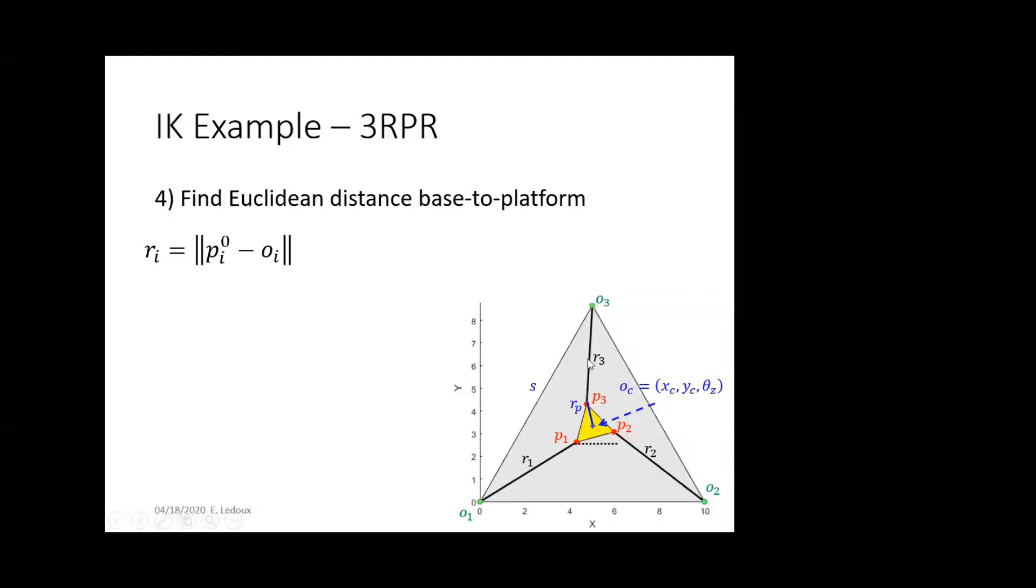Then, finally, find the Euclidean distance. So, square root of the x-squared plus the y-squared plus the z-squared, which the z's here are just going to be zero, but if you were doing it in three dimensions, you could also include the z-components. So, then we get R1, R2, R3, and knowing that those are linear actuators, then we know what position we need to command each actuator to go to, to get this desired output.